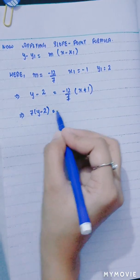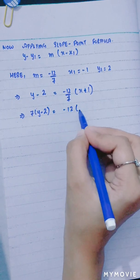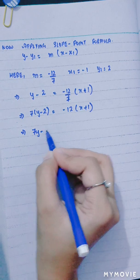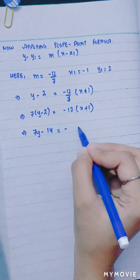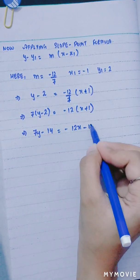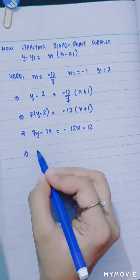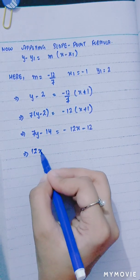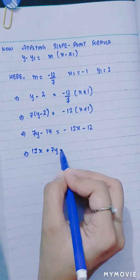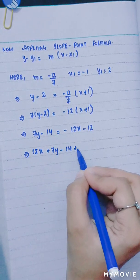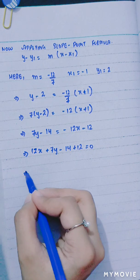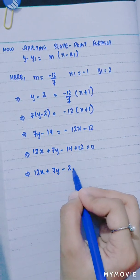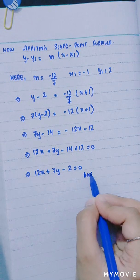7 into y minus 2 is equal to minus 12 into x plus 1. Expanding: 7y minus 14 is equal to minus 12x minus 12. Rearranging: 12x plus 7y minus 14 plus 12 equals 0, which gives 12x plus 7y minus 2 equals 0.